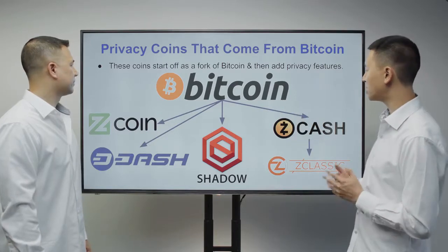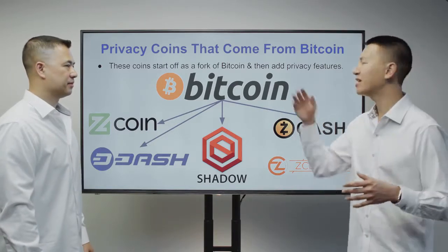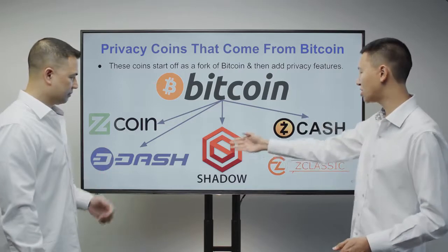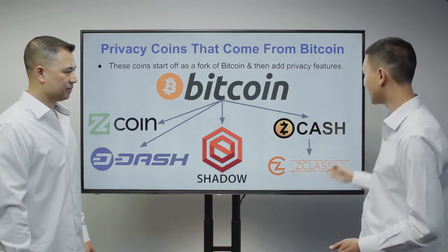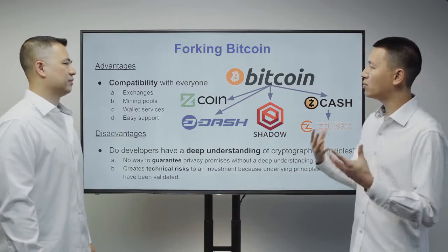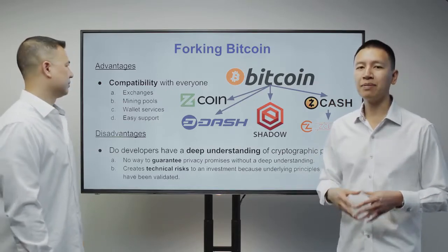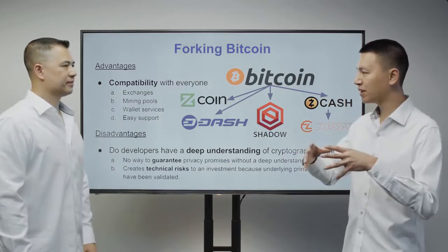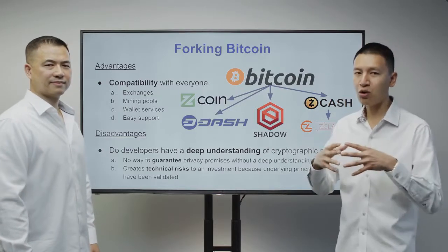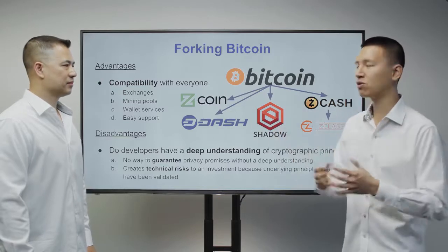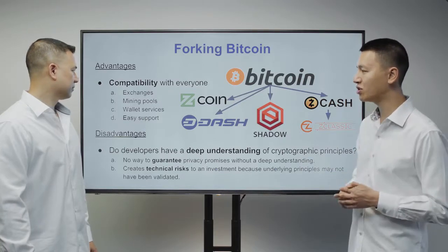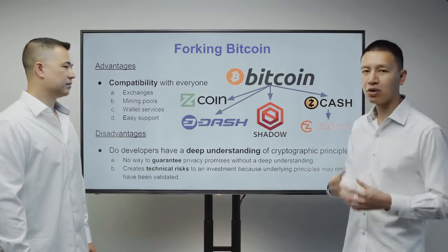There are a bunch of privacy projects that started out with the Bitcoin code base: Zcoin, ShadowCash, Zcash, and multiple forks of Zcash. The advantage of starting with the Bitcoin code base is that you're very similar to Bitcoin. It's easy for everyone to adopt your coin — exchanges can list you easily, mining pools and wallet makers can integrate you, because Bitcoin is so widely understood.